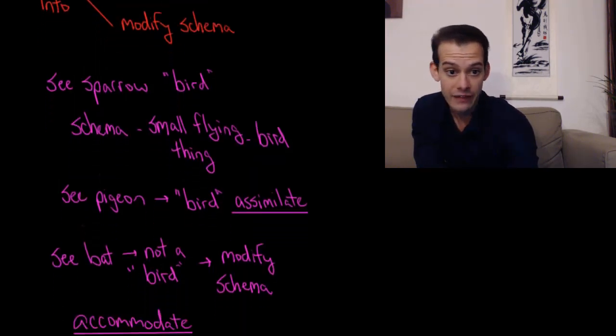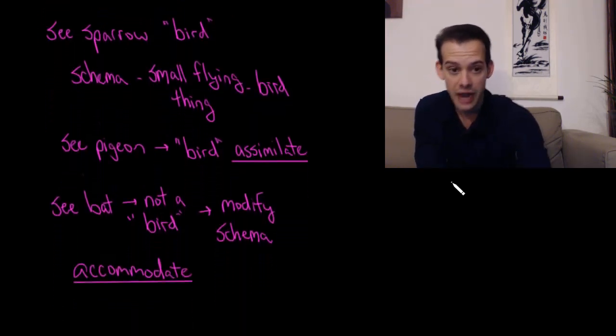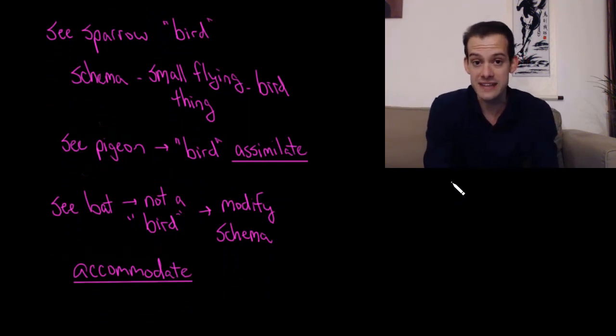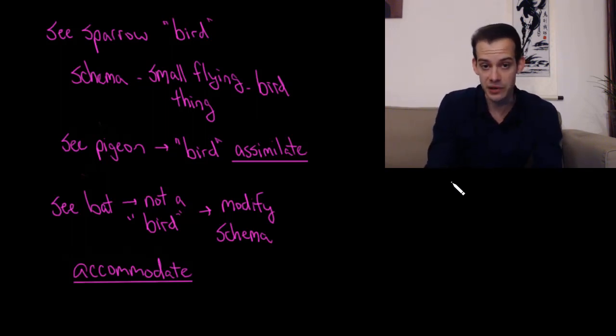So let's look at a practical example of how this might work. Let's imagine we have a child who has built up a schema for what a bird is. The child sees a sparrow and mom says, that's a bird. The child sees a wren and mom says, that's a bird. So the child starts building this schema for what a bird is. The schema might be that small flying things are birds.